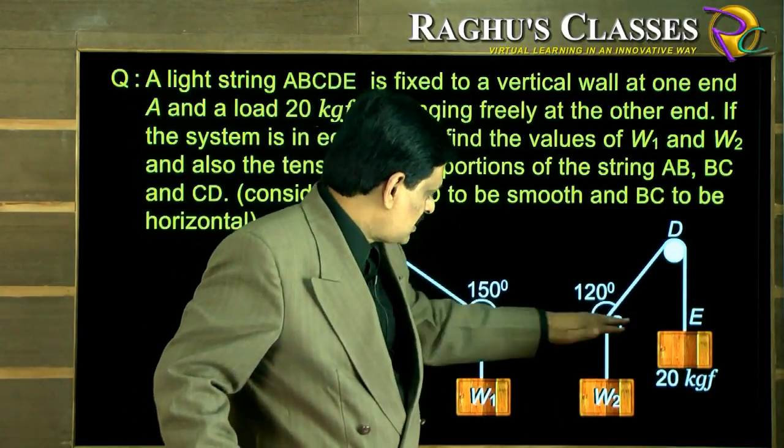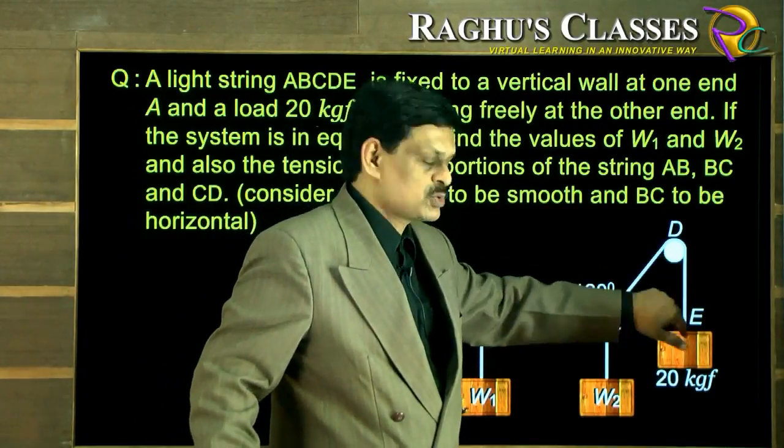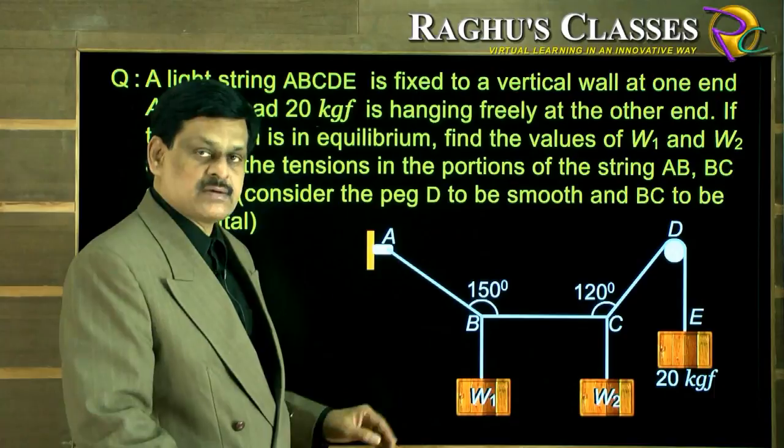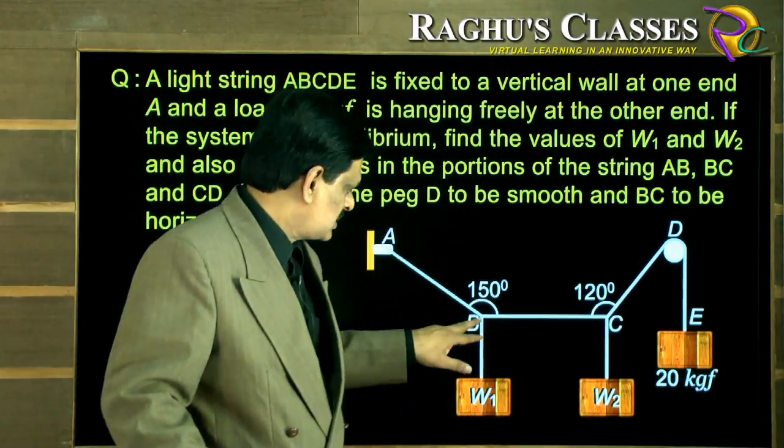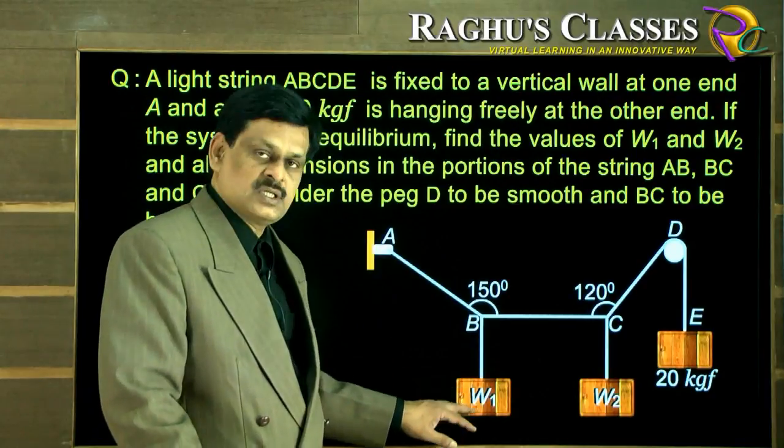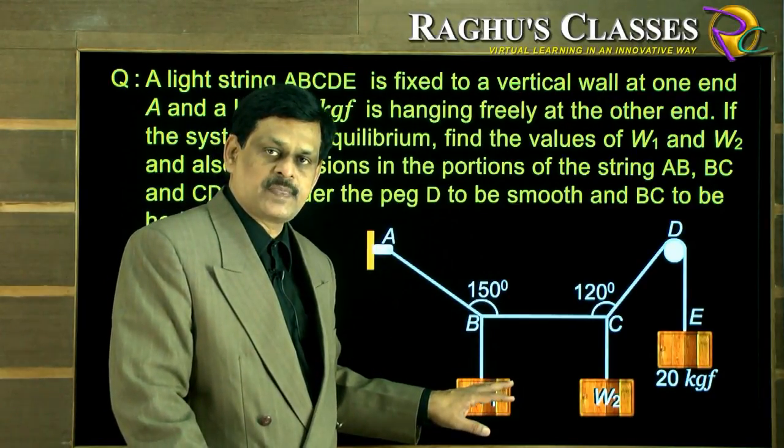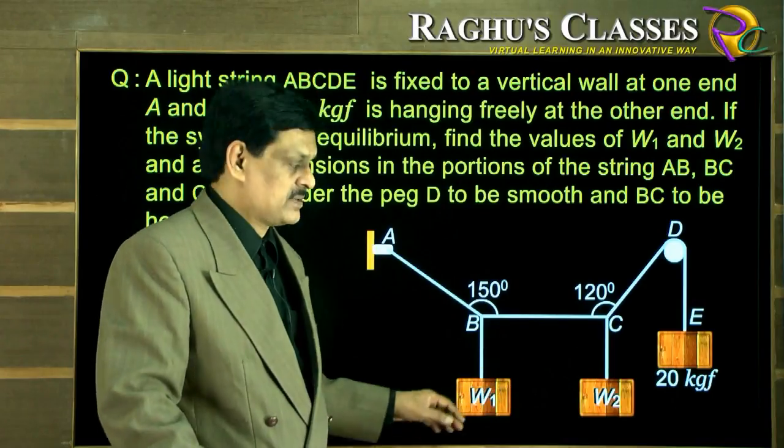It is given that this is a horizontal part and here this is a smooth part. We have two junctions here, each applied with three forces. Because the system is in equilibrium at both junctions, we can apply Lami's theorem separately.